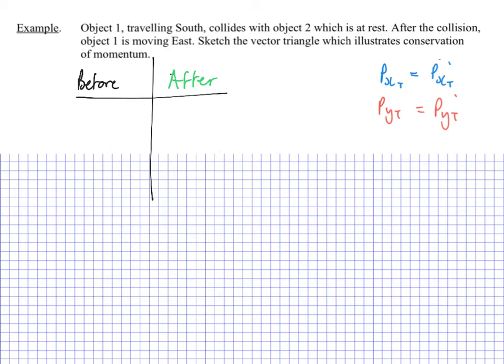So before the collision, object one is heading south. And object two is just at rest right there. After the collision, object two is heading east, it's going this way. And object one must be going somehow this way. How do I know that? Well, because I have to keep track of my conservation in the x and my conservation in the y.